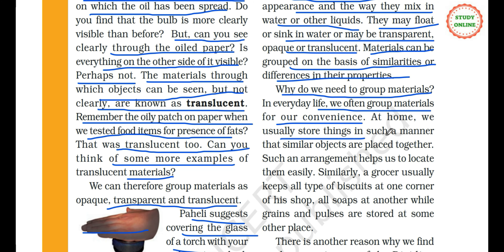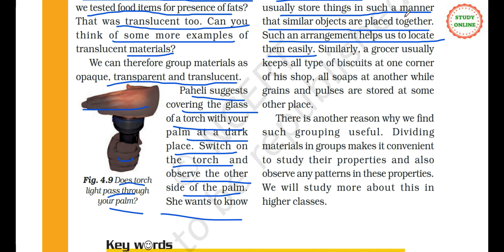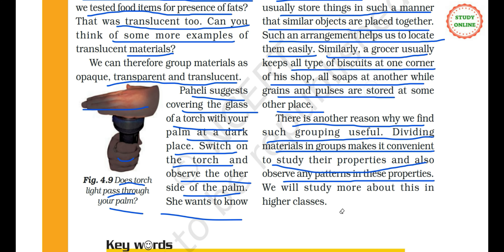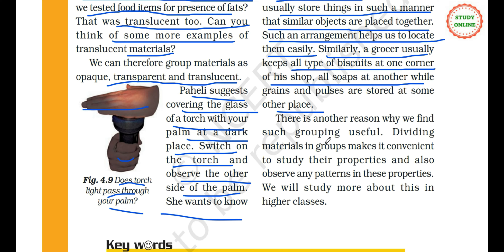At home, we usually store things in such a manner that similar objects are placed together — such an arrangement helps us to locate them easily. Similarly, a grocer usually keeps all types of biscuits at one corner of a shop, all soaps at another, while grains and pulses are stored at some other place. Dividing materials into groups makes it convenient to study their properties and observe any patterns in these properties.